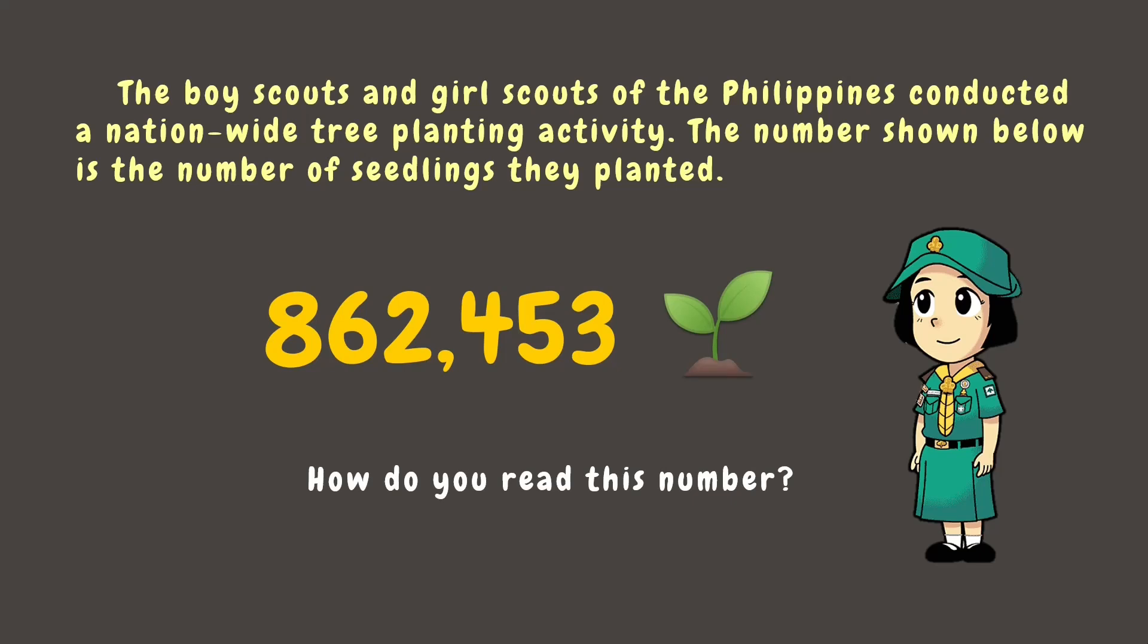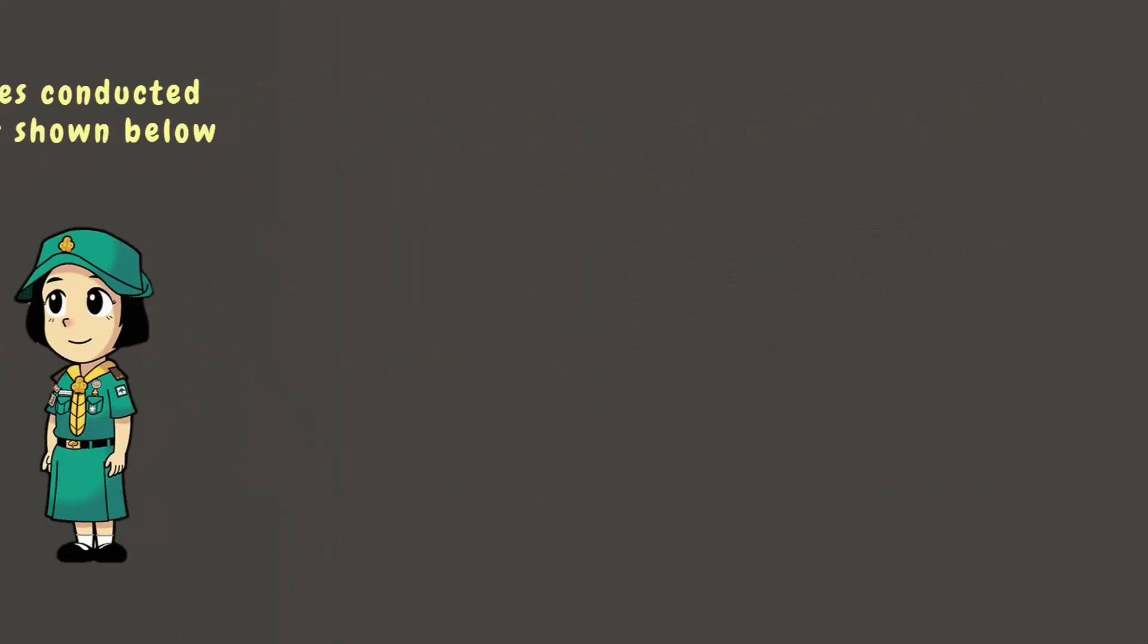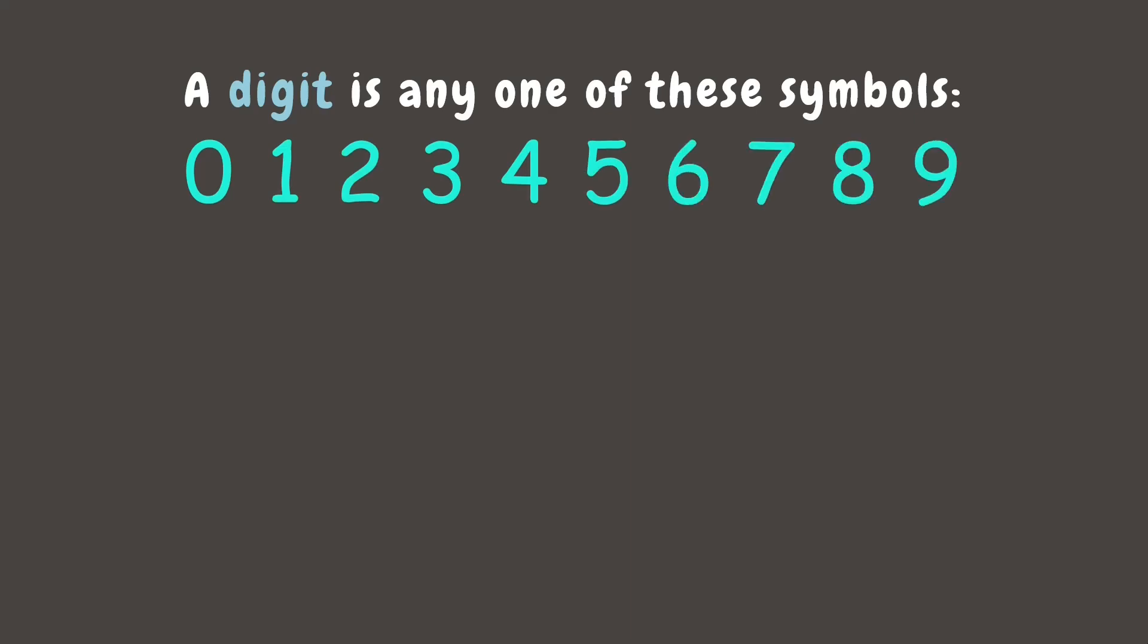A number is made up of digits to show an amount. A digit is any of these symbols: 0, 1, 2, 3, 4, 5, 6, 7, 8, or 9. Each digit has a place and a value depending on where it is in the number.